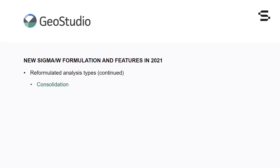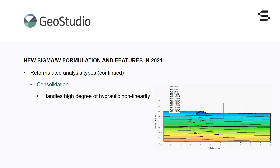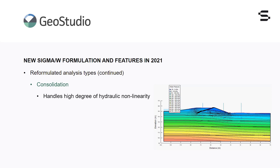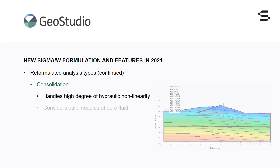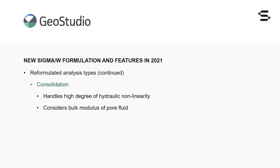The Sigma W consolidation analysis formulation has been updated to handle complex hydromechanical coupling in both saturated and unsaturated soils. Sigma W is now capable of handling the same degree of hydraulic non-linearity as SEEP-W, which opens the door to solving various classes of problems with a new degree of rigour. For example, it is now possible to simulate the complex saturated-unsaturated flow that occurs during staged construction of tailings dams in which a significant portion of the domain is unsaturated at the onset of construction. The consolidation formulation now considers the bulk modulus of the pore fluid, making it possible to simulate fully undrained responses without numerical issues.